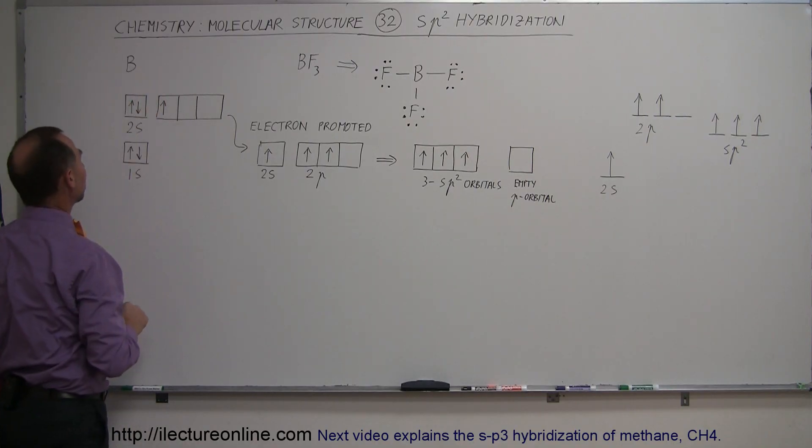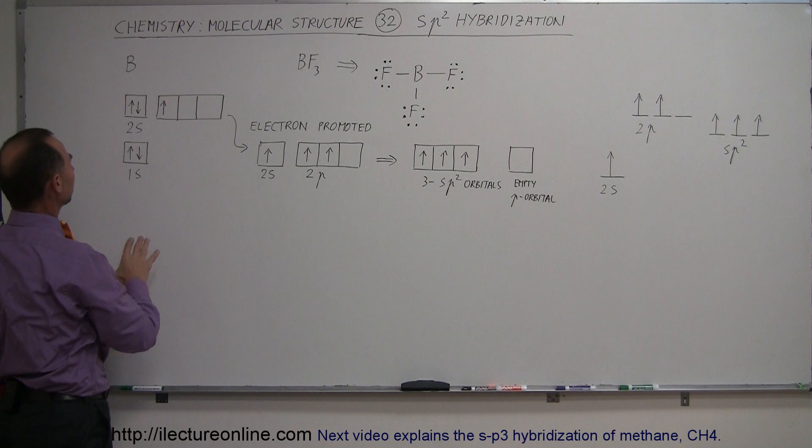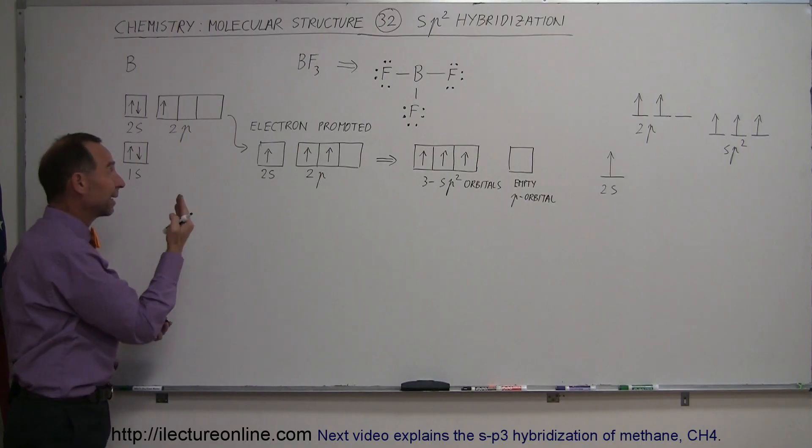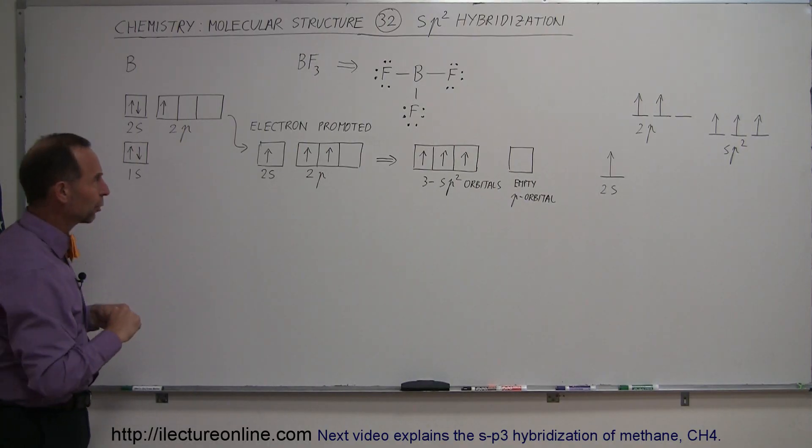Boron is the fifth element in the periodic table. It has five protons in the nucleus, five electrons. The first two in the 1s orbital, the next two in the 2s orbital, and then the fifth one in the 2p orbital. Of course, there's 3p orbitals, only one electron, meaning that electron will reside in one of those 3p orbitals.